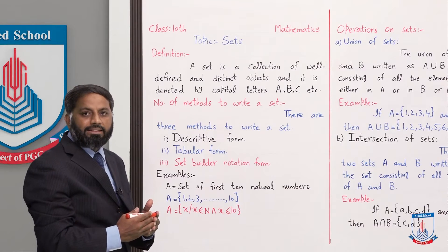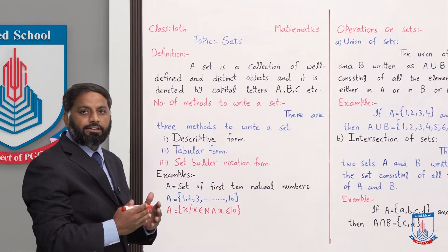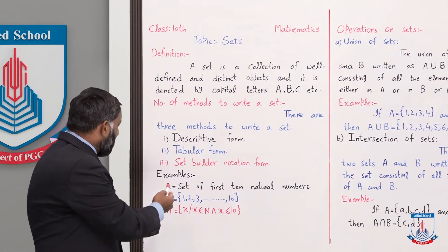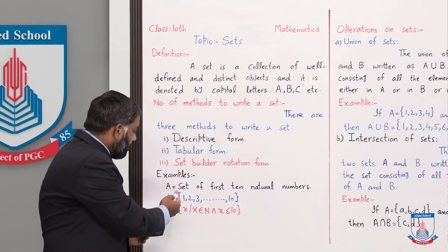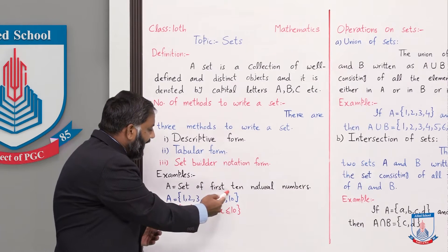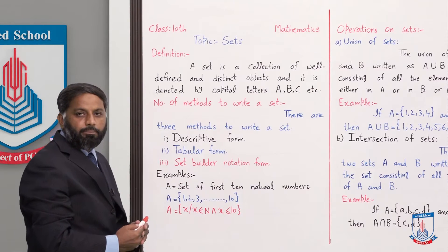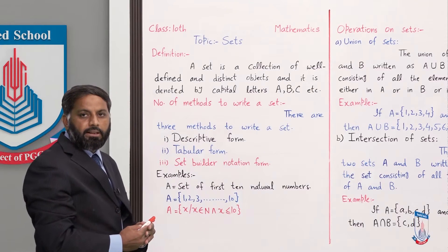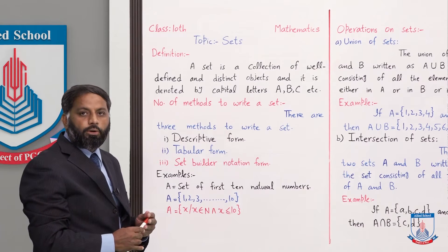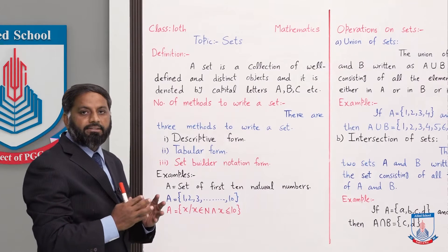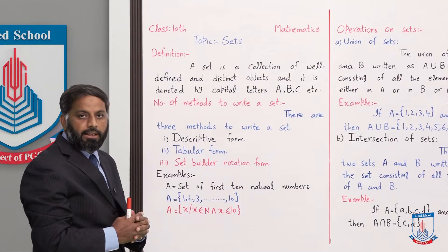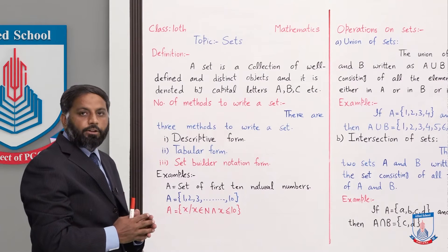Descriptive method میں set کو کیسے لکھتے ہیں — نیچے example دی بھی ہے: A = set of first ten natural numbers۔ یہ کسی بھی set کو لکھنے کا descriptive method ہے۔